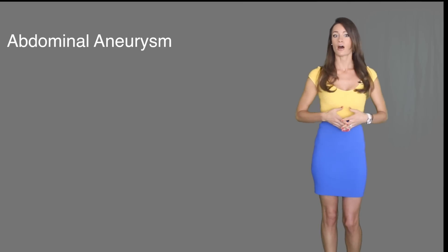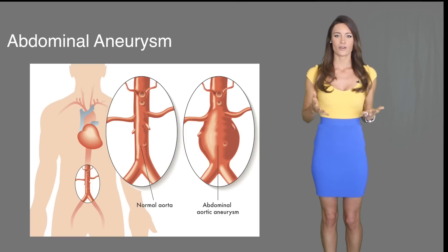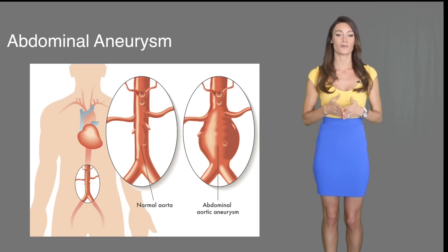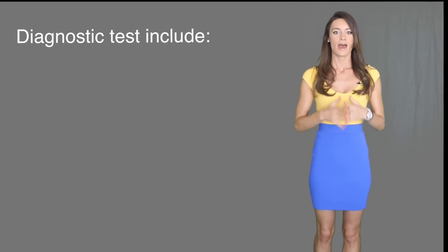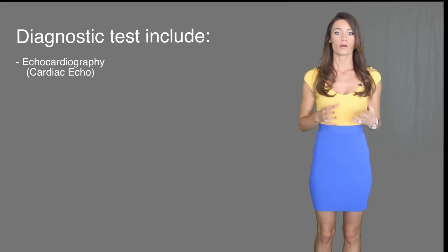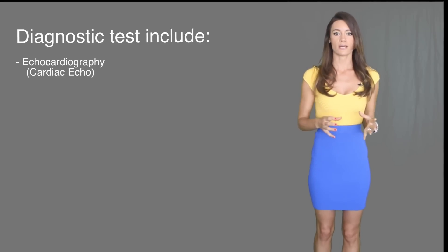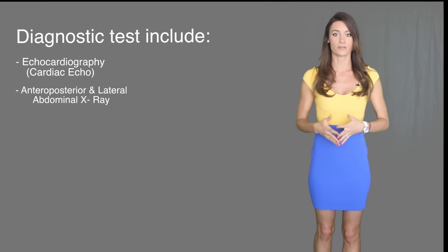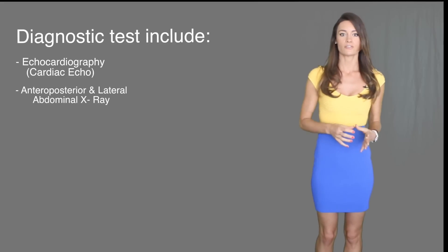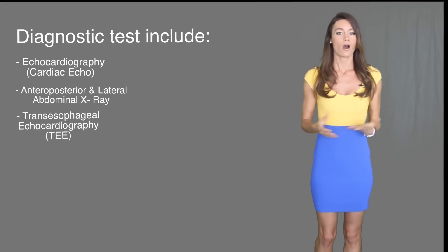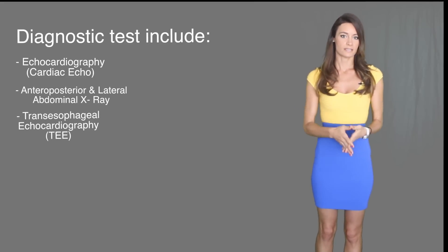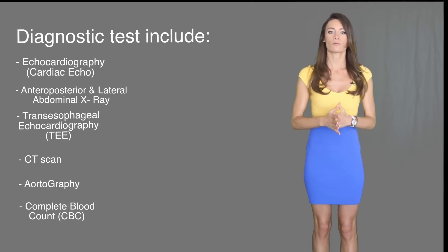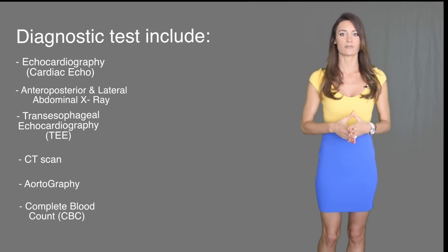Another type is abdominal aneurysm. There are usually no symptoms associated with this type; however, when you listen to the patient's abdomen you may hear a bruit. Diagnostic tests include echocardiography or cardiac echo, which is an ultrasound that can show the aneurysm and its size. Other exams include anterior, posterior, and lateral abdominal x-ray, transesophageal echocardiography (TEE), a CT scan, aortography which can show the exact location, and a complete blood count which will most likely show a decreased hemoglobin level.